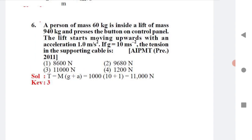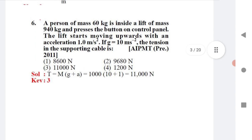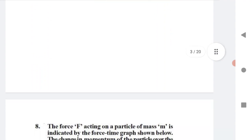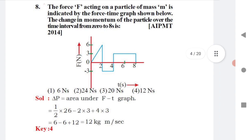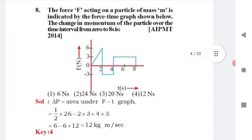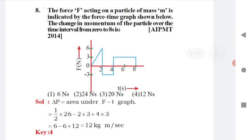Question 5: A person of mass 60 kg is inside a lift of mass 940 kg and presses the button on the control panel. The lift is moving upward with a given acceleration. The tension formula is T = m(g + a). Substitute the values to get the answer.